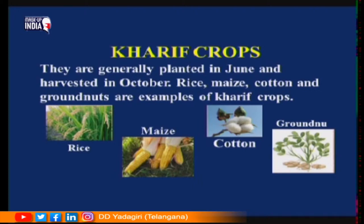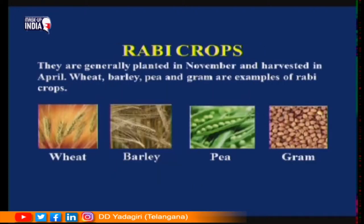The next type is Rabi crops. These crops are grown during the winter season. Rabi crops are generally planted in November and harvested in April. Examples are wheat, barley, pea, and grams.